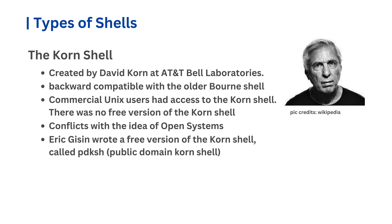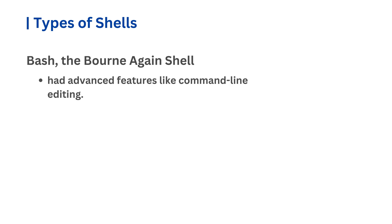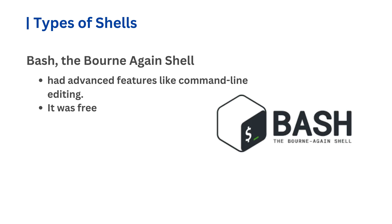The Korn shell was very popular on proprietary Unix systems, but Linux, a free Unix-like operating system, grew faster than expected. Linux users wanted a shell with advanced features like the Korn shell but also needed it to be open source. Users needed a shell that could run Bourne shell scripts but also had advanced features like command line editing, and was free and not tied to any proprietary licenses. This led to the creation of Bash, also known as the Bourne-again shell.